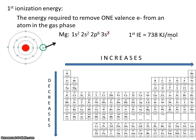And the value is about 738 kilojoules per mole. So to remove one mole of electrons from magnesium, it would take this many kilojoules. Now you don't need to memorize this number. I'm just putting it up here for the sake of example. So that's first ionization energy. How much energy it takes to remove one valence electron.